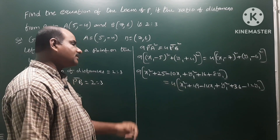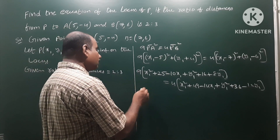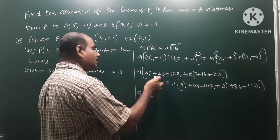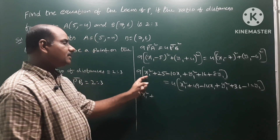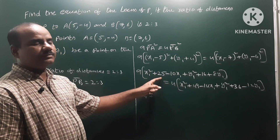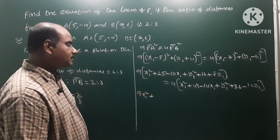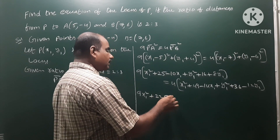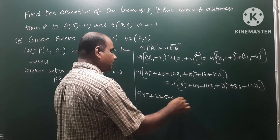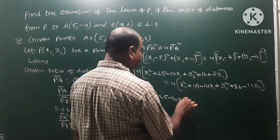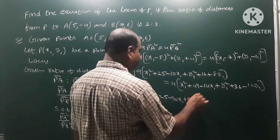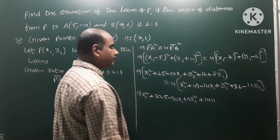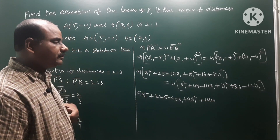Left side with 9 multiplied: 9x1 square plus 9 into 25 equals 225, minus 9 into 10x1 equals 90x1, plus 9y1 square, plus 9 into 16 equals 144, minus 9 into 8 equals 72, so minus 72y1.